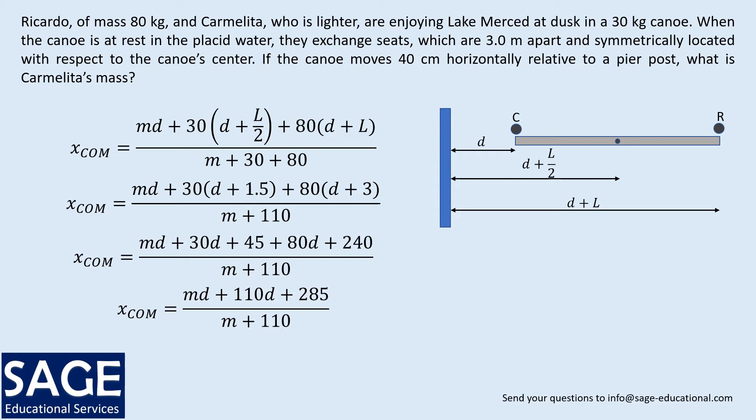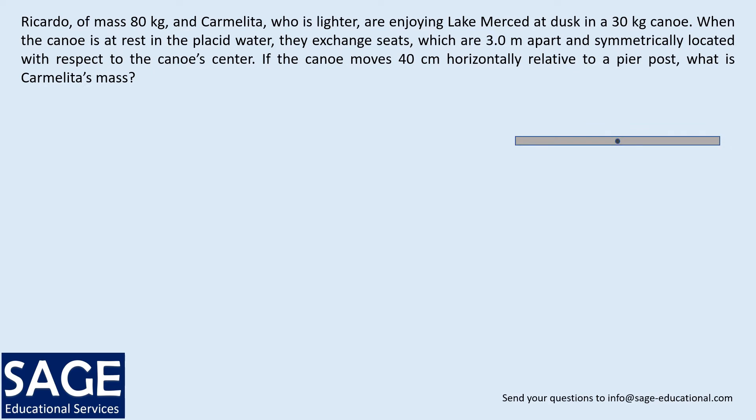Next, Ricardo and Carmelita interchange their positions. We again have the boat with its center of mass, and Carmelita and Ricardo have switched places, still measuring distances from the pier. The 40 centimeter motion horizontally converts to 0.4 meters. Since Ricardo has moved closer to the pier, the boat moves away from the pier. So the new distance for Ricardo is d plus 0.4, for the center of the boat that is d plus l over 2 plus 0.4, and for Carmelita the distance is d plus l plus 0.4.